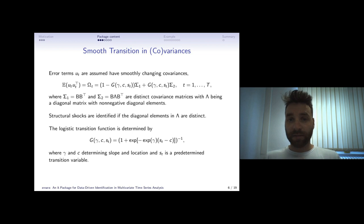So the smooth transition in covariance model. The idea is that we have in the beginning of a sample a specific covariance structure sigma 1 and in the end of the sample a different covariance structure sigma 2.